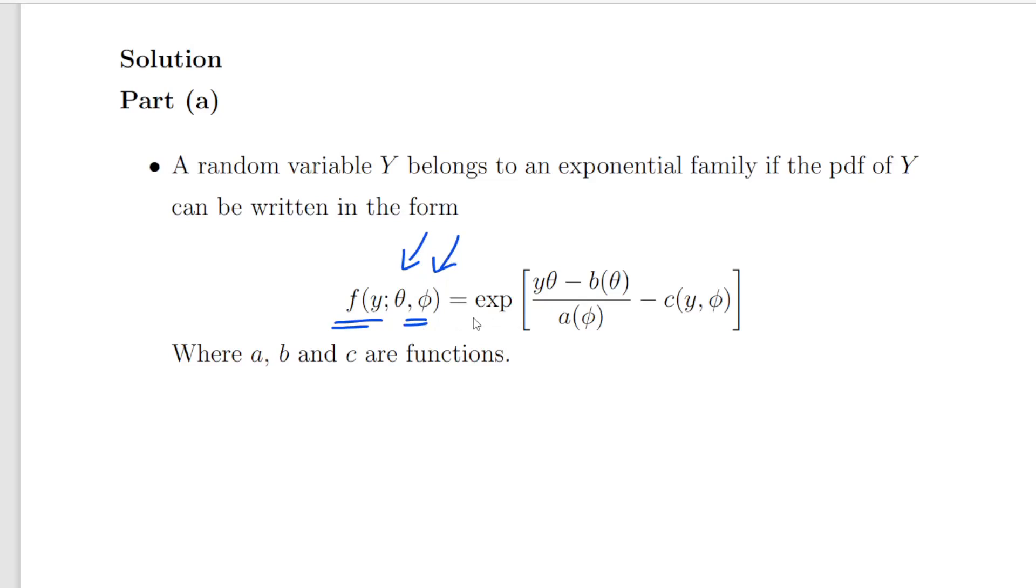The basic idea is that we want to be able to express the probability density function in the following format: the exponential of this expression here. So we have two parts to it: Y times theta minus b of theta divided by a of phi, and the second part is minus c of Y and phi.